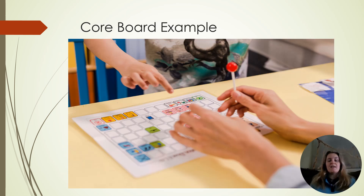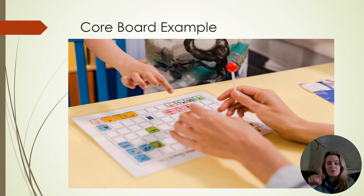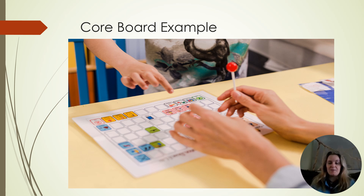This is what I prefer as an introduction to AAC — a core board. It's just a laminated piece of paper. You can see the child's finger and the adult across, and the adult points and models two symbols on this board. Hopefully the child will start to point to these symbols once they learn their meaning.